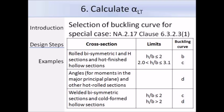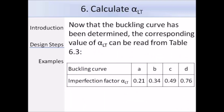This is the table for the National Annex that you use for the special case for rolled sections, and it is used in the same way as the table for the general case — you determine the buckling curve and then go to table 6.3 to get the required value of alpha LT. Table 6.3 is similar to table 6.1 used for the column buckling resistance check. For example, if we have buckling curve C, alpha LT will be 0.49, and for buckling curve D, alpha LT will be 0.76.